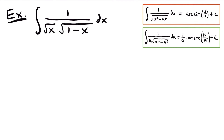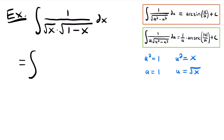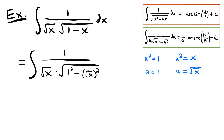We set a squared equal to 1 and u squared equal to x. Taking square roots, a equals 1 and u equals the square root of x. Rewriting the integral, we have 1 divided by the square root of x times the square root of 1 squared minus the square root of x squared dx. At first glance it may seem like arc secant applies since we have u times a square root, but we need to check the derivative of u before drawing conclusions.